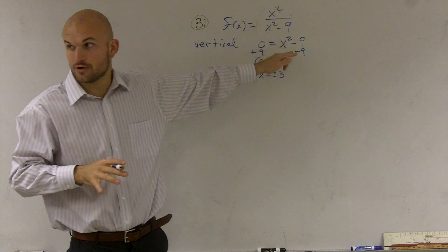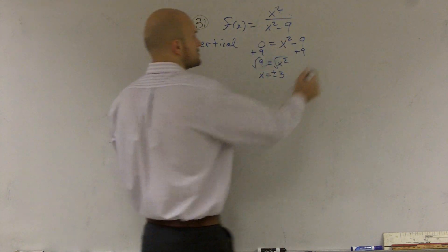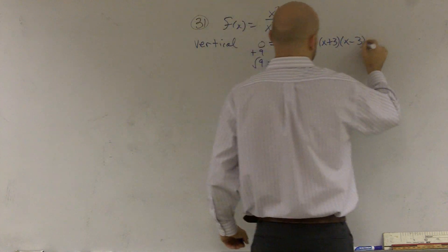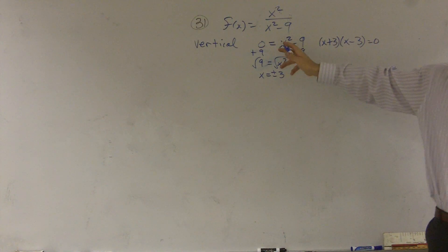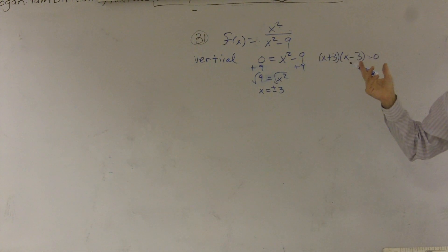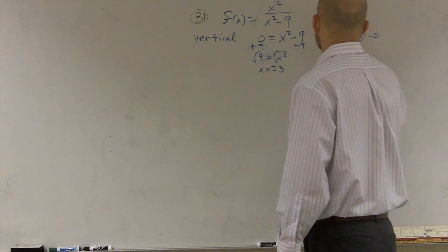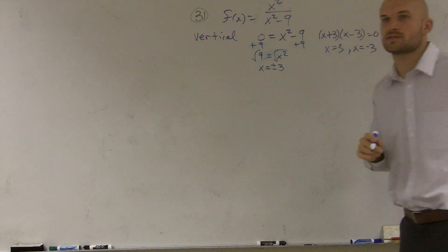I would like you guys also to notice, though, this is a difference of two squares. So you could also just write x plus three times x minus three equals zero. You guys should notice that your first number is a square number, your second number is a square number. Therefore, it's a difference of two squares.